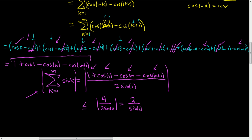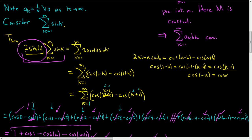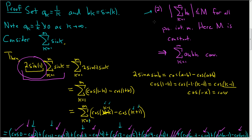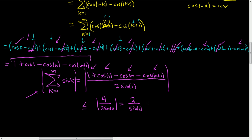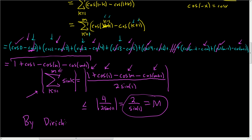So condition 2 holds from Dirichlet's test. We found our big M — it equals 2 / sin(1) — and this big M does not depend on little m, so it is an actual legitimate bound. By Dirichlet's test, the infinite sum as n runs from 1 to infinity of sin(n) / n converges. This convergence is conditional; to show that, you would need to show that the sum of the absolute values diverges, which is actually a bit harder.